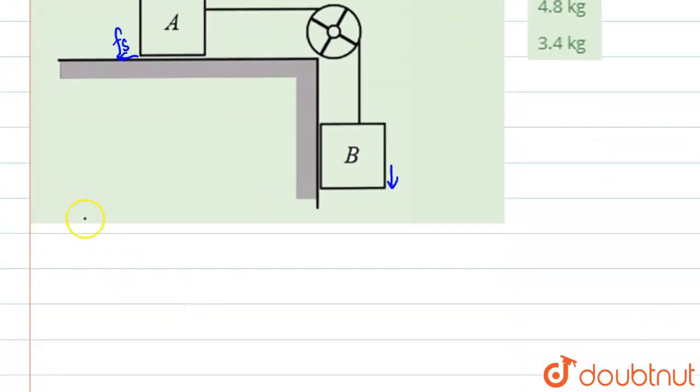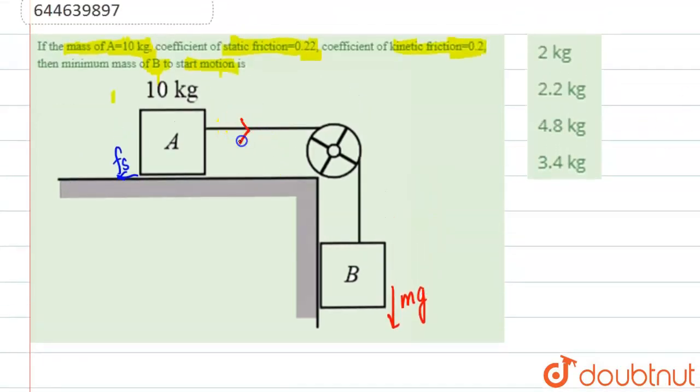So how are we going to do this? Let's suppose the mass of B is m, so there will be a force mg downwards. This block A will also have a force mg this side because of the tension in the string. The tension in the string will also be mg only because of this block.